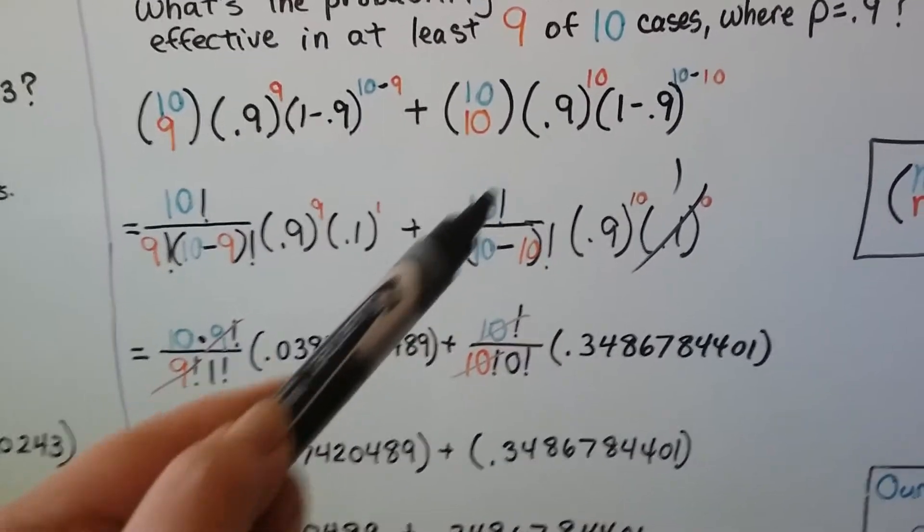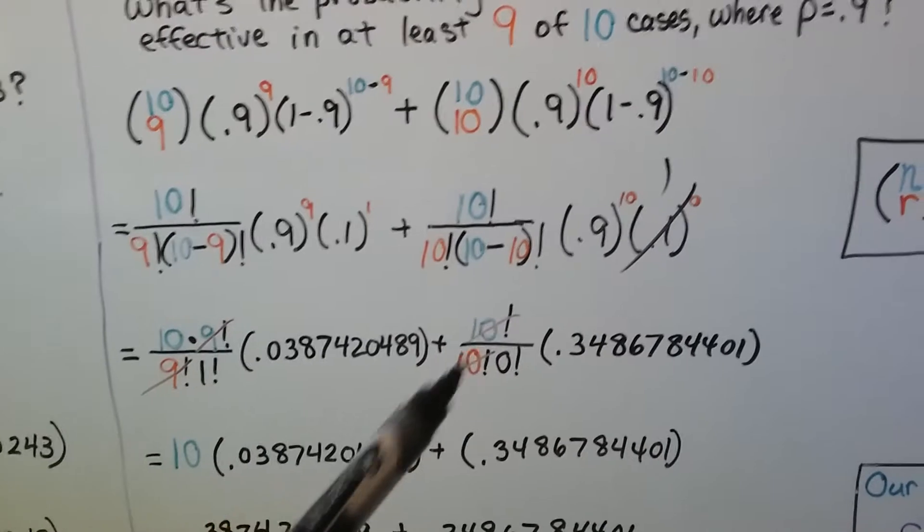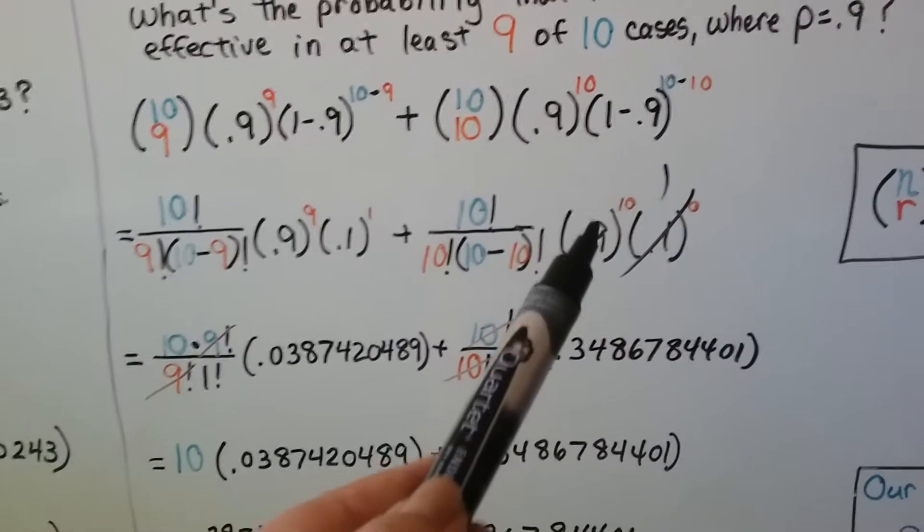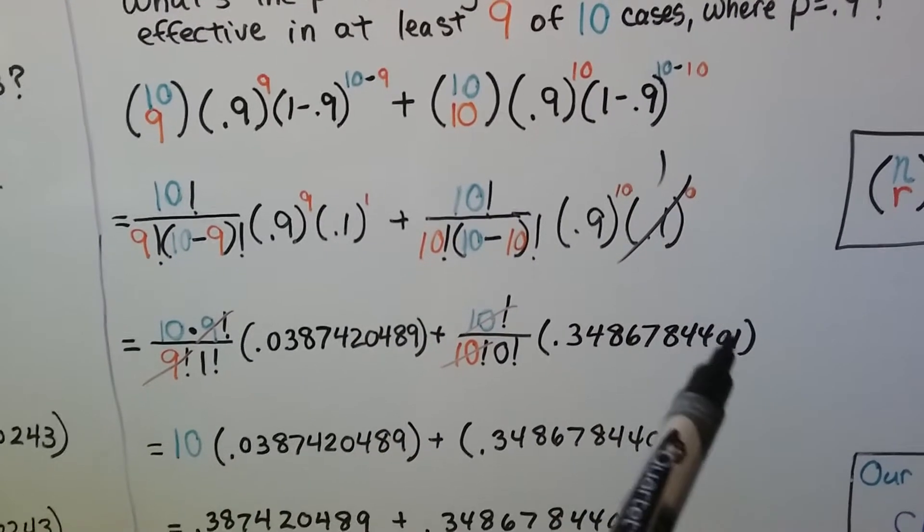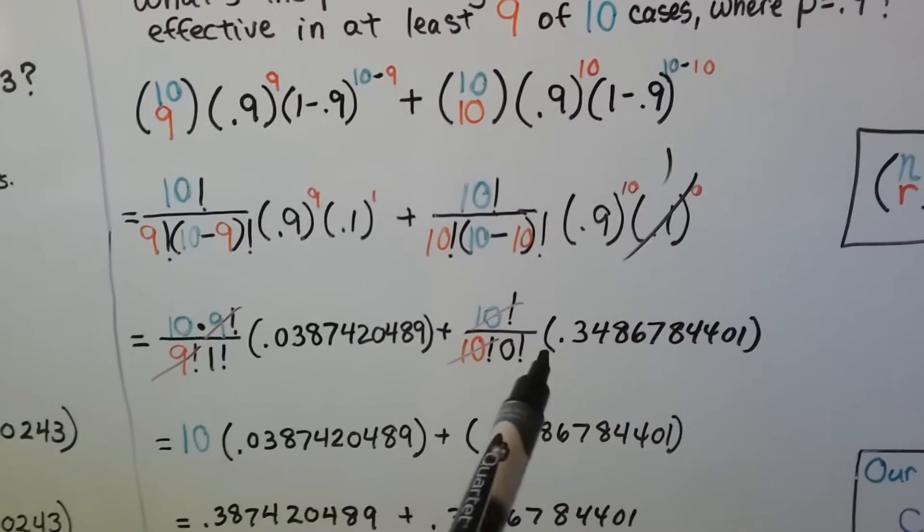Here we can cancel out these two 10 factorials. And 0.9 to the tenth power comes out as this. It's times 1, so it's just still this.